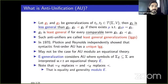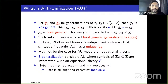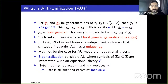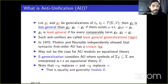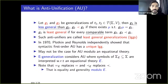They showed that the syntactic first-order language has a unique LGG. As our talk is about unital theories, when it comes to equational theories for anti-unification, it's not necessarily the case that there's a unique least general generalizer anymore. An E-generalization considers anti-unification where some special set of symbols Σ_E are interpreted with respect to an equational theory E.